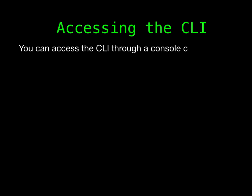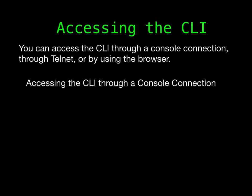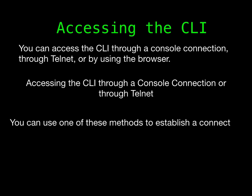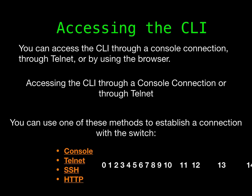Before you can access the CLI, you must connect a terminal or a PC to the switch console port and power on the switch. If your switch is already configured, you can access the CLI through a local console connection or through a remote Telnet session, but your switch must first be configured for this type of access. You can use one of these methods to establish a connection with the switch: connect the switch console port to a management station or dial-up modem.